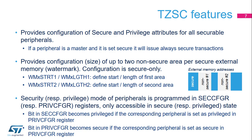The TZ-SC provides the configuration of secure and privileged attributes for all securable peripherals. It is itself a TrustZone Aware peripheral because it contains a mix of secure and non-secure registers. The Watermark Start and Length register pairs define non-secure regions per protected external memory, defined as secure by default. These registers are only accessible in secure state. In STM32L5, five non-secure areas can be defined: two in the OctoSPI address range, two in the FSMC-NOR address range, and one in the FSMC-NAND address range.